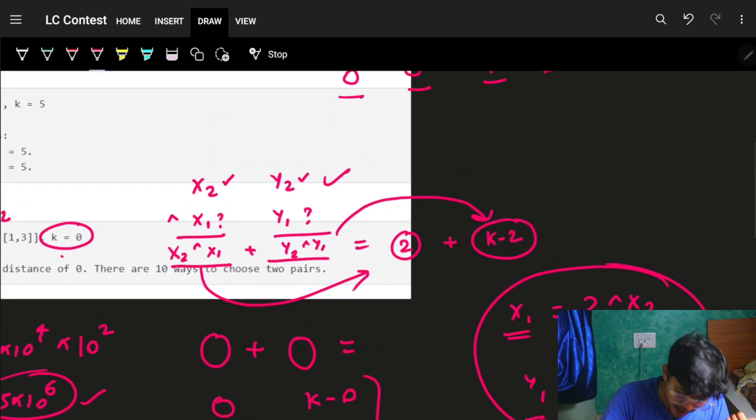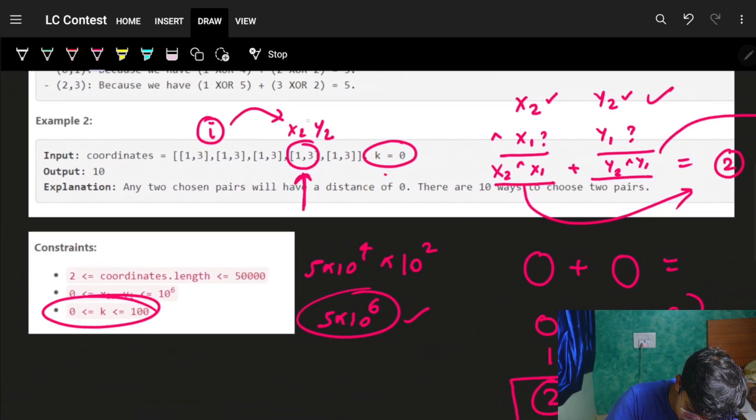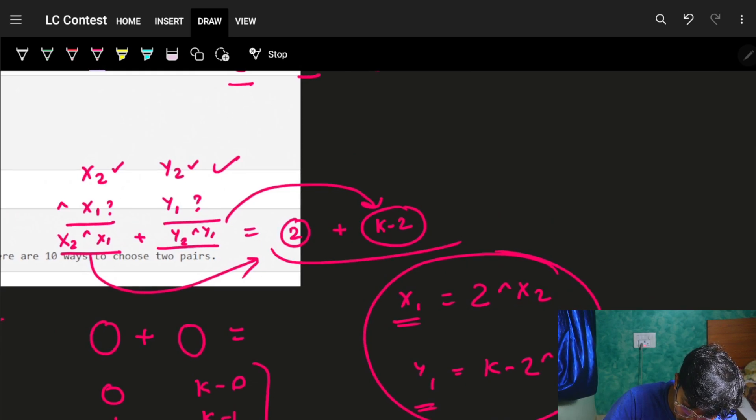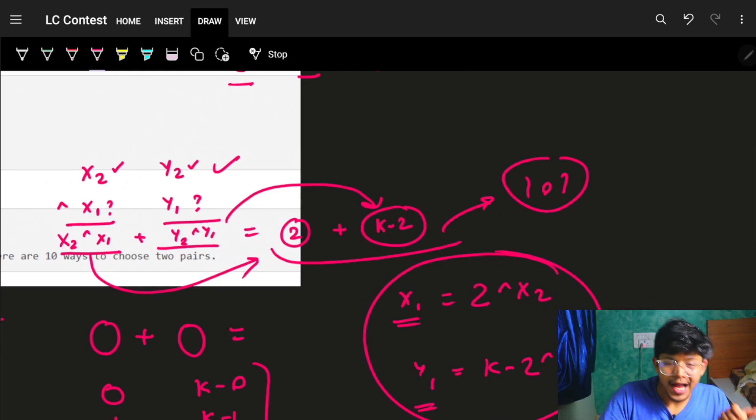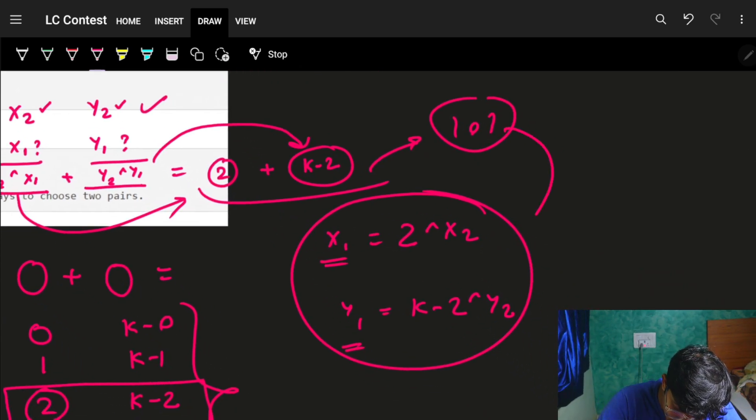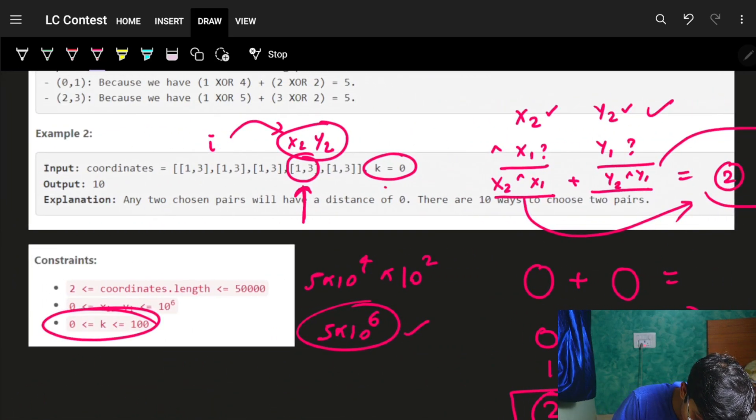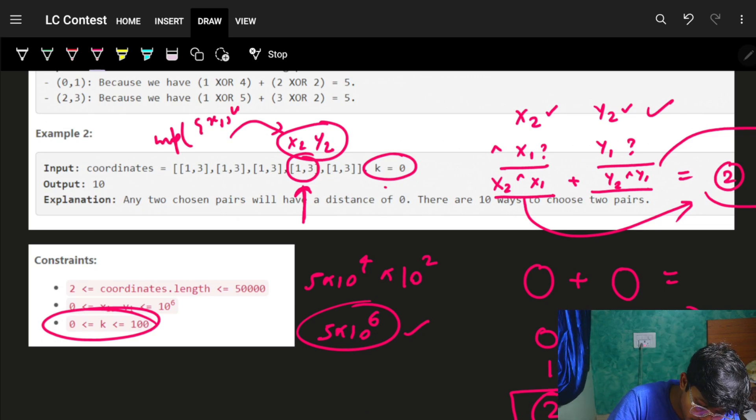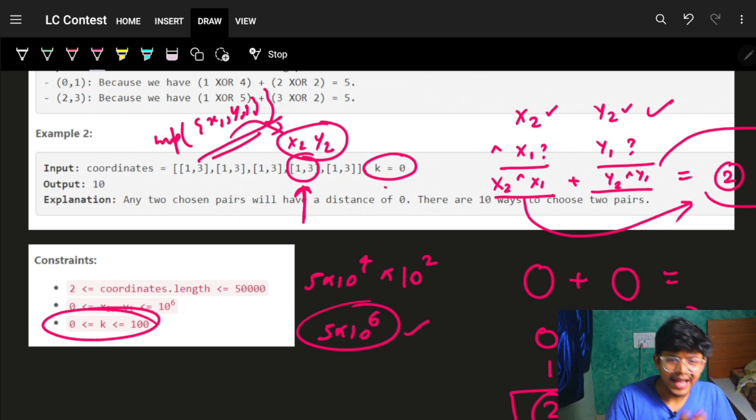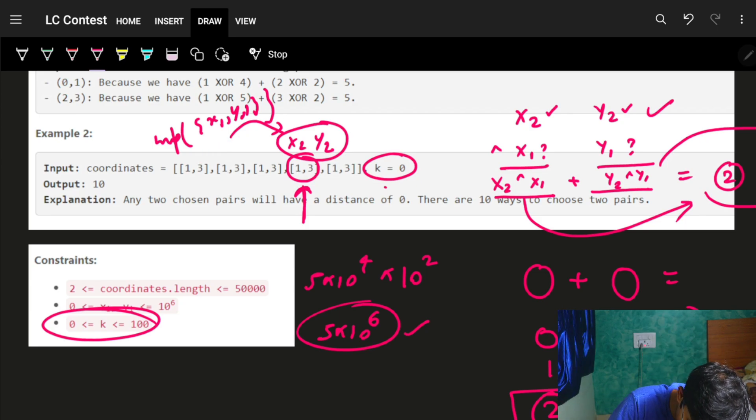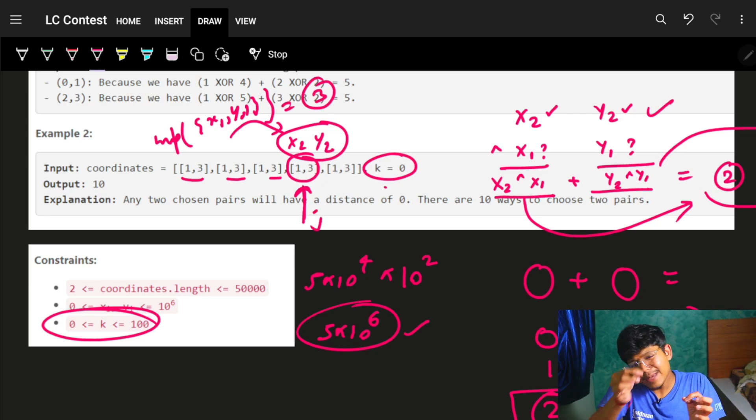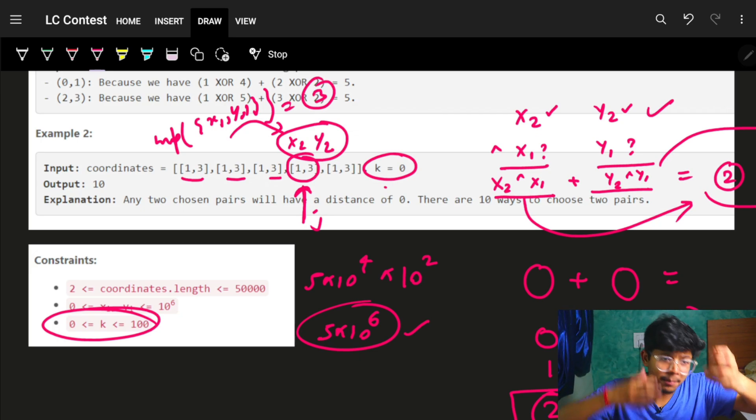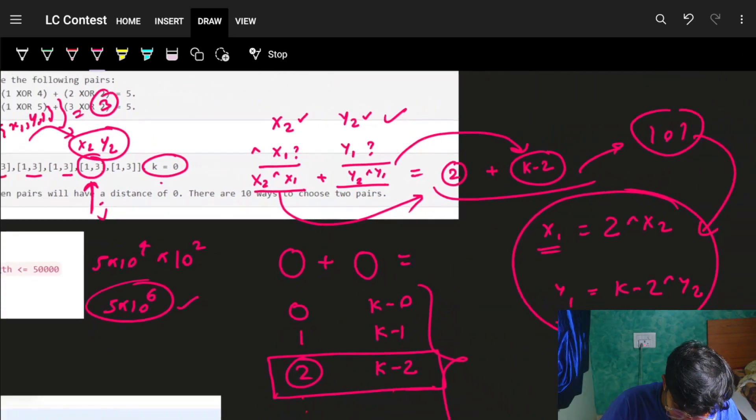By this condition, when you're at (x2, y2), you try all 101 combinations. For every combination, you find (x1, y1), then count the frequency of that pair using a map of (x1, y1). That will give you how many such previous pairs exist. For this particular j, you might get a count of 3, and you keep going through every element, upgrading the count.